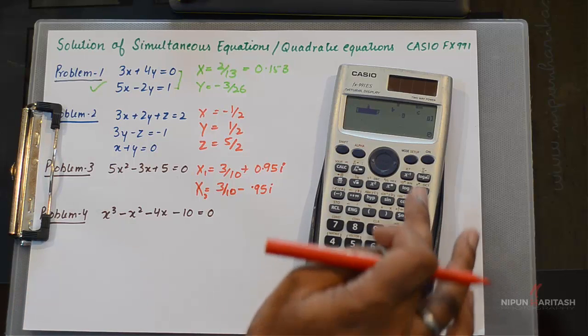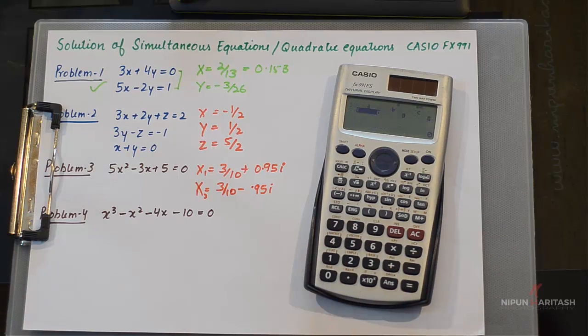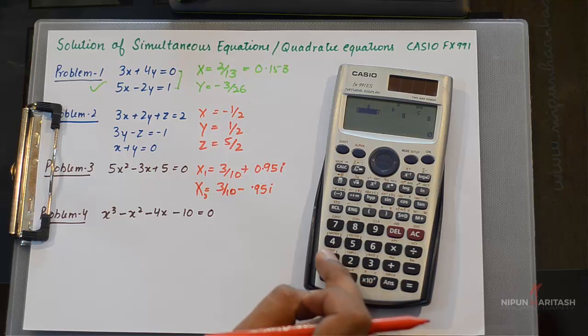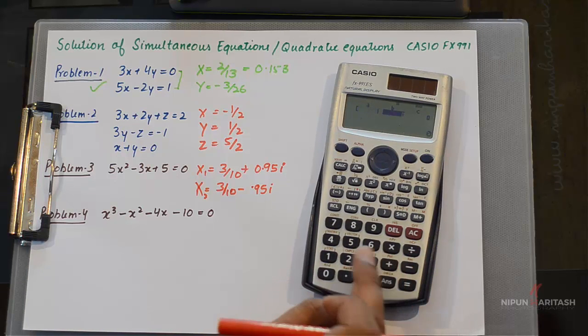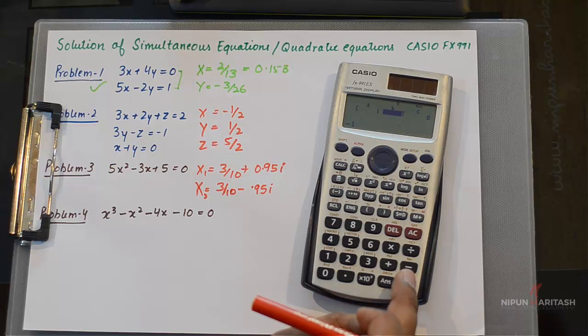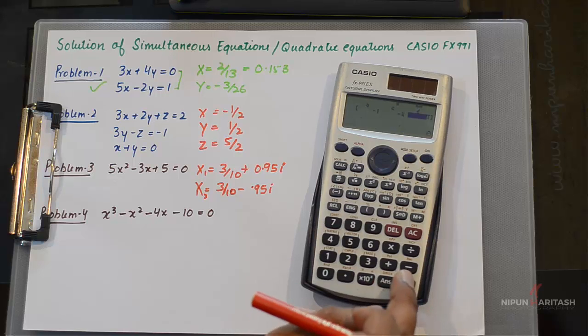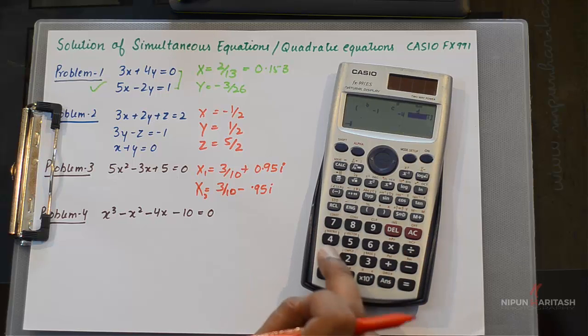We can go back to equation and press 4. Here we have the coefficient of X³ as 1, X² as -1, X is -4, and the constant is -10.